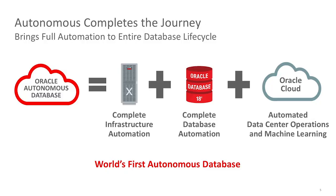Oracle Cloud Infrastructure allows us to introduce the world's first autonomous database by combining the most optimized infrastructure for running database systems, the complete database software, and the machine learning algorithms which automate data center operations.